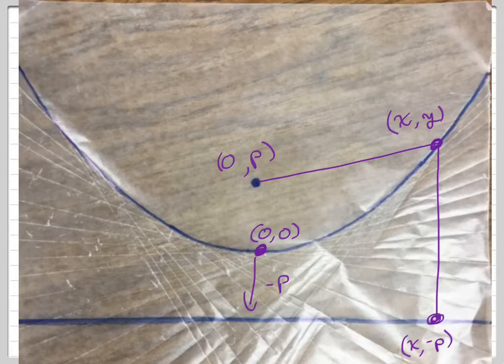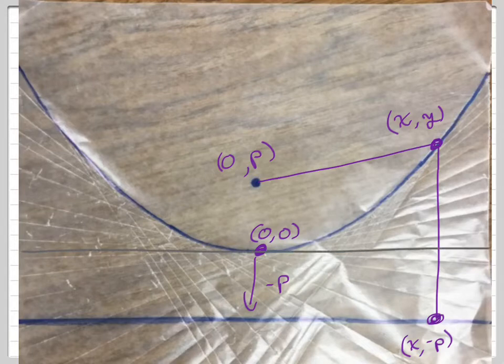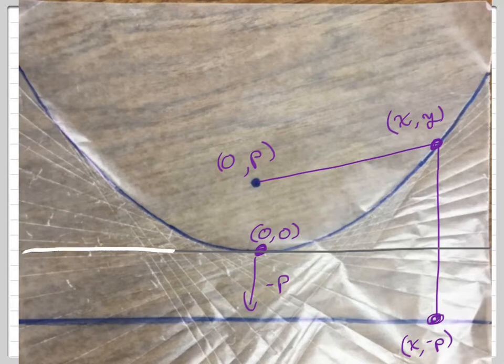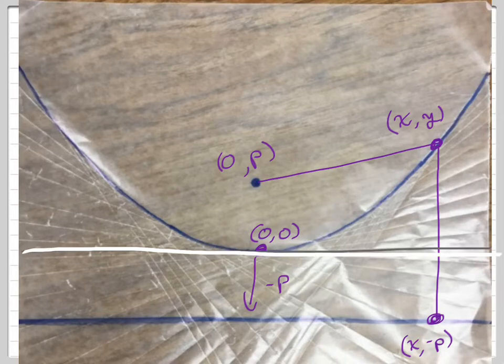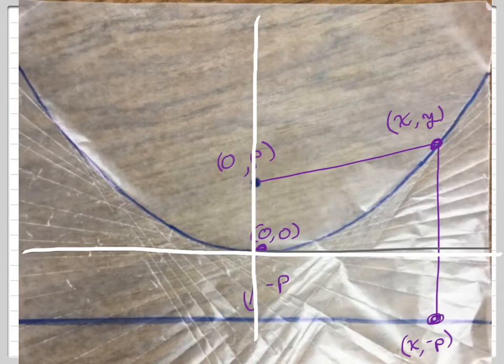Negative p. No, because here's my x and y axis. My x axis is right here. Oh, we can barely see that. My x axis is right here. And my y axis is right here. I missed the vertex there, or the origin. But you guys see my points? 0,p, x,y, and x,negative p? Okay, check this out.